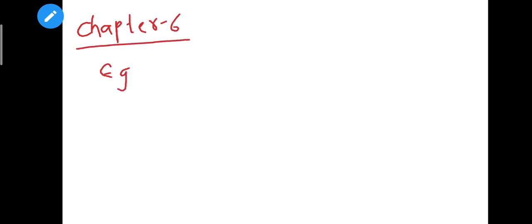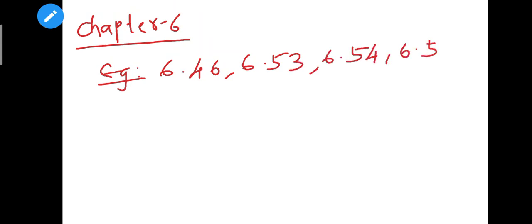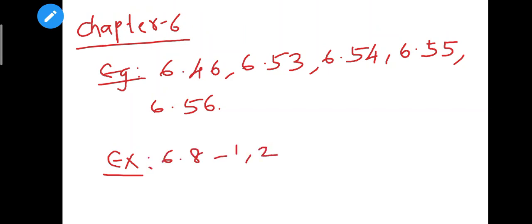Next is the sixth chapter — Vector Algebra. It is an important chapter overall. So chapter 6 — example number 6.46, next example 6.53, next example 6.54, next example 6.55, next example 6.56. In these examples, learn them. Next exercise 6.8 — first sum, second sum. Next exercise 6.9, and 6.9 sums 1 and 2. So now in this video you can learn the sums — useful video, please share and subscribe to our channel. Thank you for watching.